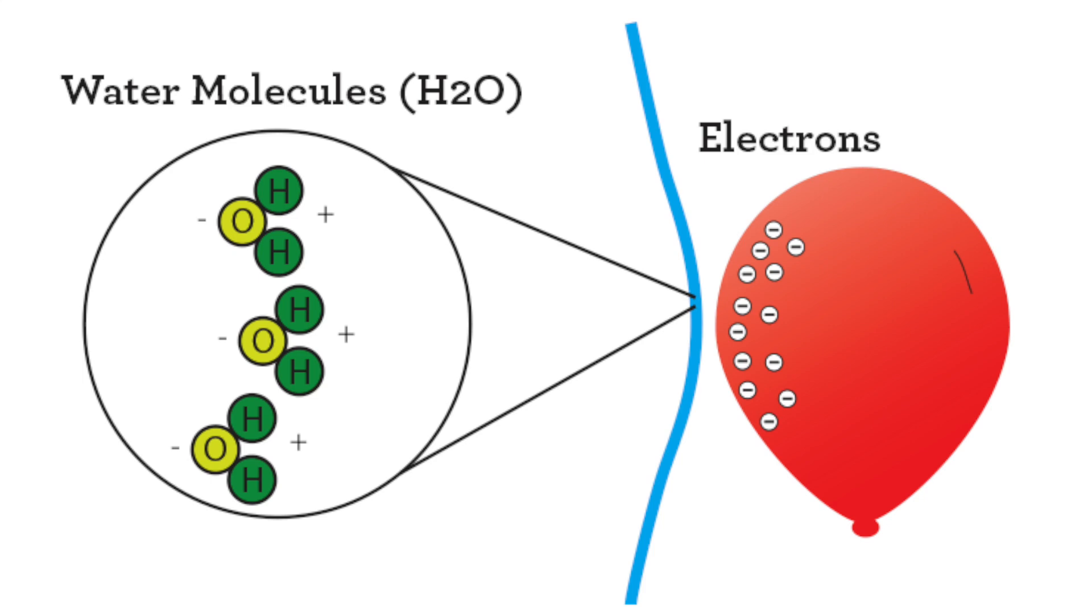So when moving the negatively charged balloon near the stream of water, electrons near the balloon are repelled away. Moreover, the molecules in the water are divided into two sides: one side is positively charged where it is attracted, and the other side is negatively charged where it's repelled.